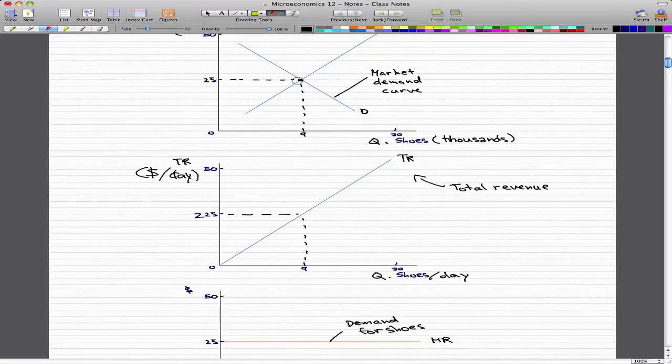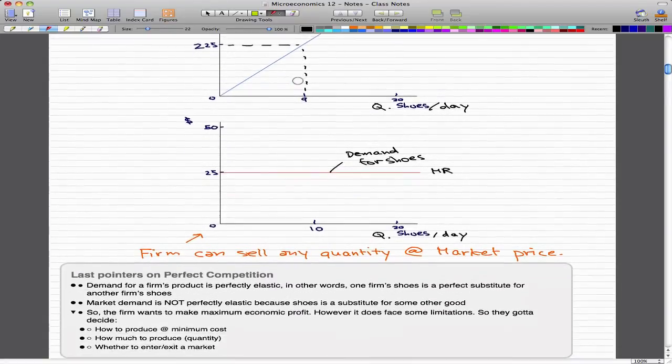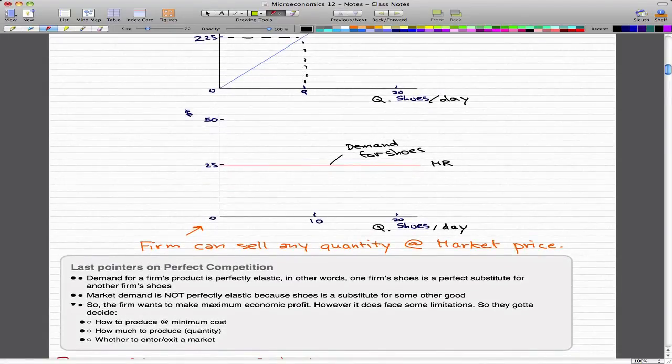Here are some last pointers for perfect competition: the demand for a firm's product is perfectly elastic. We're talking about the firm here. In other words, one firm's shoes is a perfect substitute for another firm's shoes. For example, with Nike and Adidas, they are two different firms with two different brands. Nike shoes are a perfect substitute for Adidas shoes, and Adidas shoes are a perfect substitute for Nike.